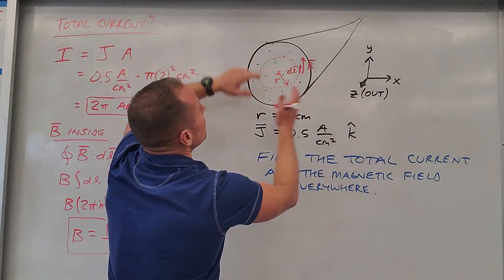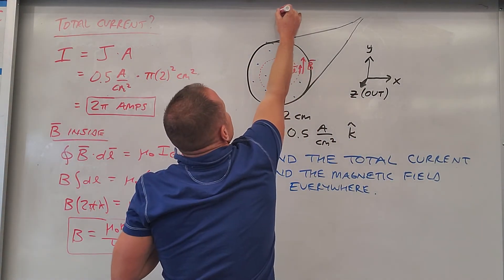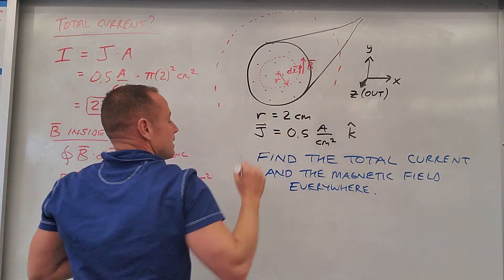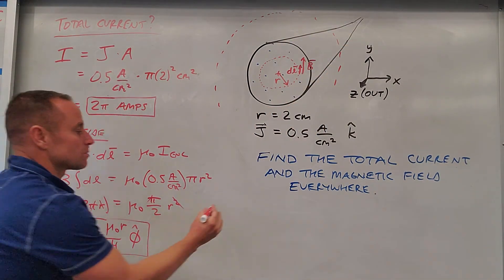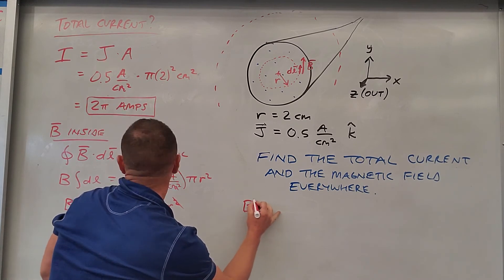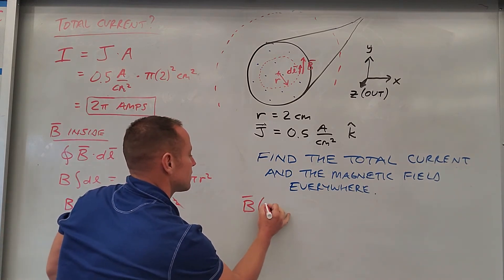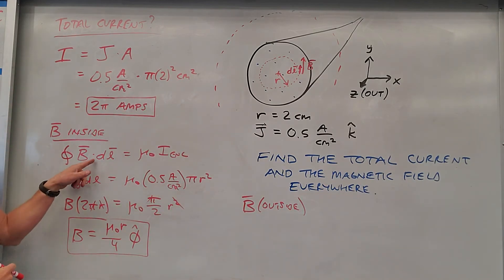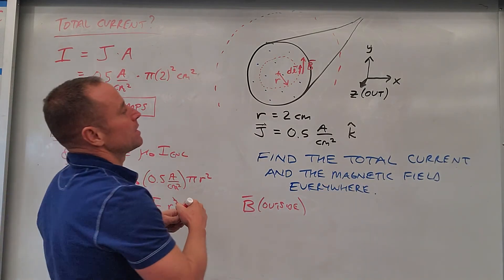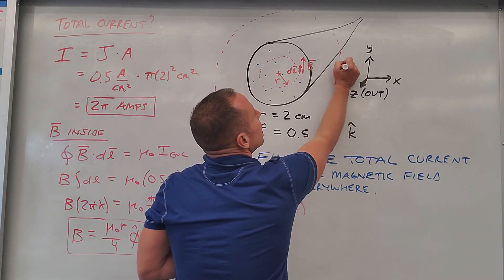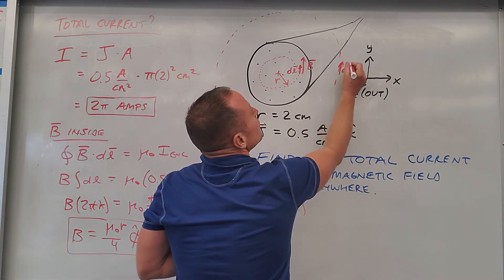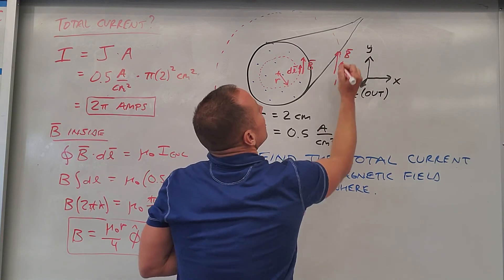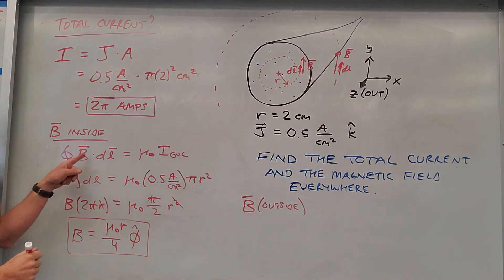pointing in the φ̂ direction. When we go to get the field outside, the only thing that changes is our Amperian loop is going to be out here. Right, so if you look at our previous work, let's quickly view this down here. This is going to be B outside. The left-hand side is going to be exactly the same because you'll have dl and B pointing in the same direction out here.